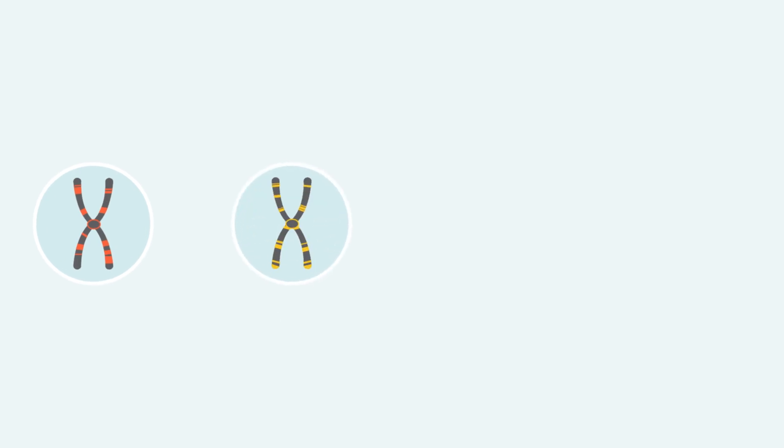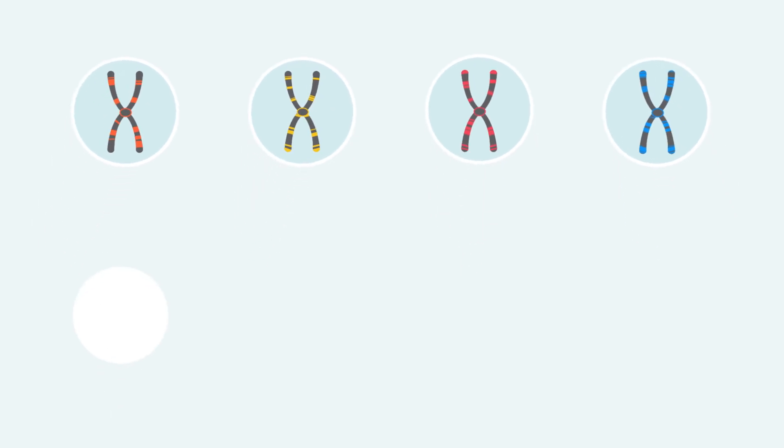Sometimes, there are differences in the way our genetic code is written. These differences are called genetic variants. These differences make each person unique.